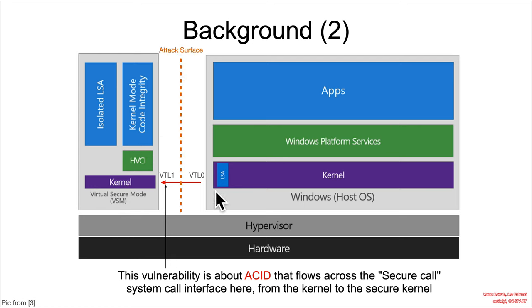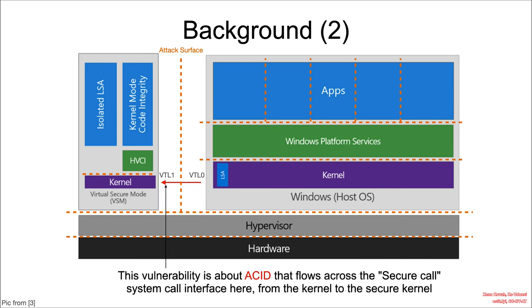The fact that there's data flowing from a low-trust to a high-trust region means that this is an attack surface. This secure call mechanism should be treated as untrustworthy data coming in from the less secure kernel. If you want to think about attack surfaces, everything should be treated as attacker-controlled: the secure kernel shouldn't trust the normal kernel, the hypervisor shouldn't trust the normal kernel, apps shouldn't trust each other. Attack surfaces are everywhere, and that's why you need to program paranoid — because it's not paranoia if they really are out to get you.